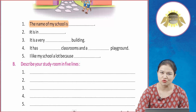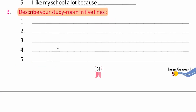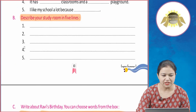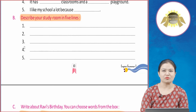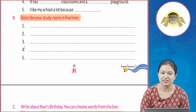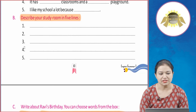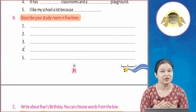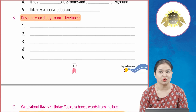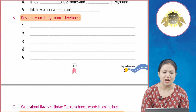Isi tarah se aap baqi ke fill in the blanks ko bhi khud se fill karo ge. Ab describe your study room in five lines — aapko aapne study room ke baare mein five lines mein describe karna hai. Jaise ki aapne study room mein kya karte ho, aapne study room mein kya kya cheezein rakhte ho — wo cheezein aapko in lines mein mention karna hai.